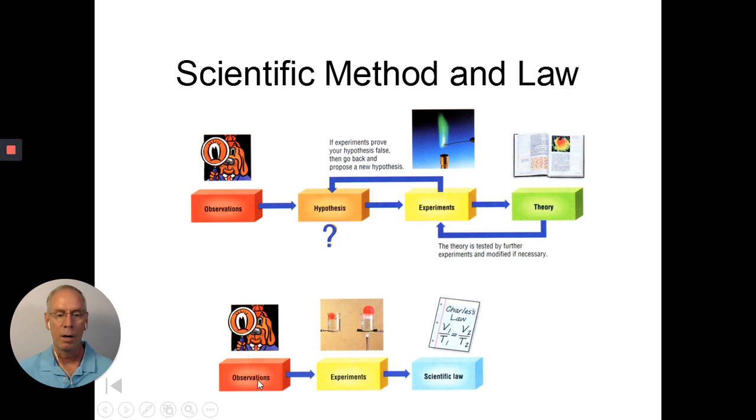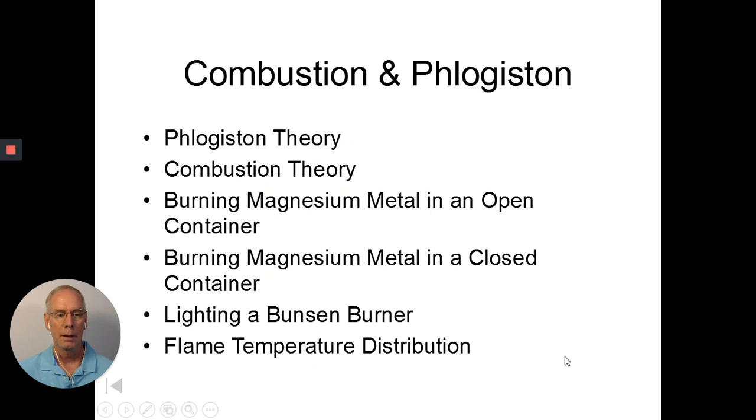In a scientific law, we have observations, we run experiments, and then we make some conclusion about what will happen, and that's called a law. Now, a scientific law does not explain why something happens. It just explains what will happen. There's a little bit of a difference there. All right, so there's some different theories. I'm not going to read those to you. We'll kind of talk about some of those maybe a little bit.